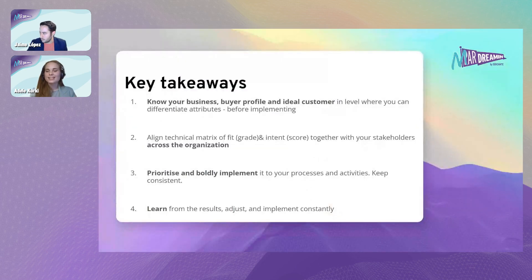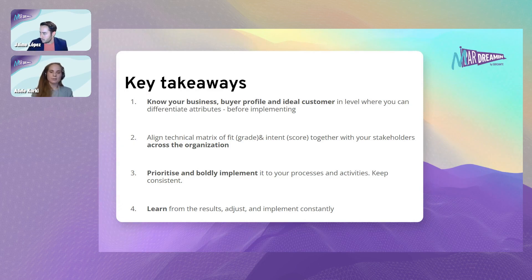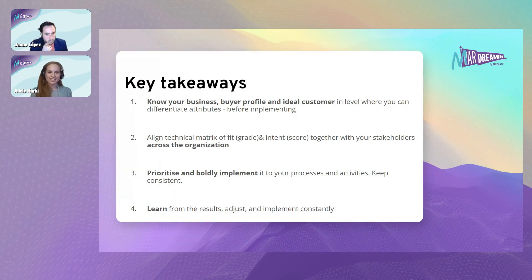To move on to key takeaways — four main things we really want you to go out with. First, make it extremely clear when you're starting this project: make the visualization, note the attributes, and map the technicalities to support those. Second, align throughout your organization that you're talking the same language on what the target is, how you differentiate, how you personalize the journey, and how you follow up matching profiles. Third, prioritize and start implementing once the decision has been made — keep it consistent and coherent throughout your processes and communications. And finally, learn from early implementations and start adjusting. This is a continuous process, and as Jaime pointed out, your ICP may change over the years — just remember to apply those changes to your technical setup.